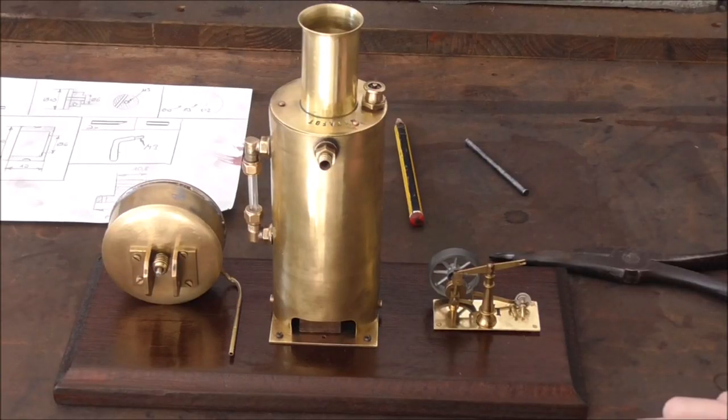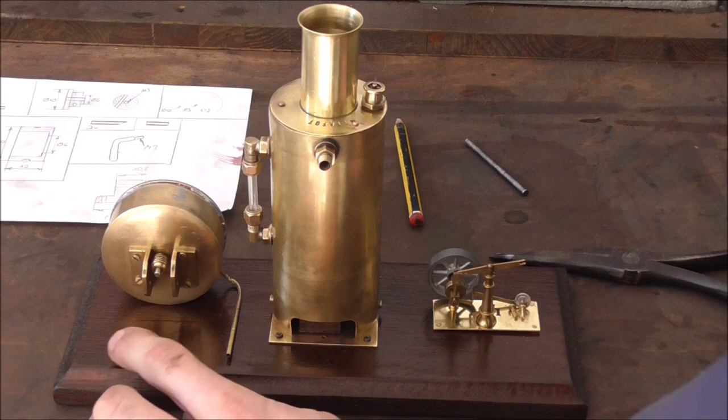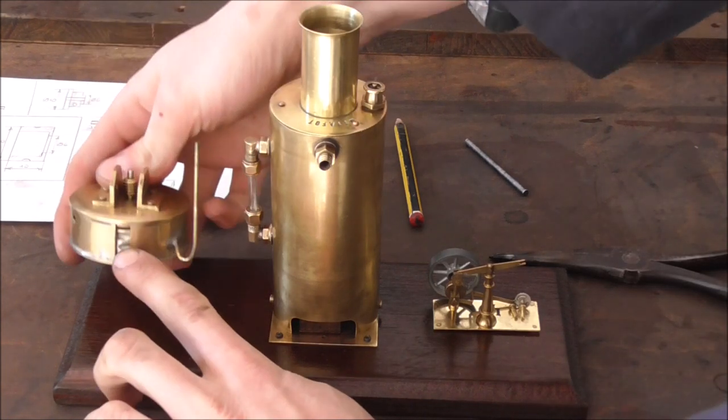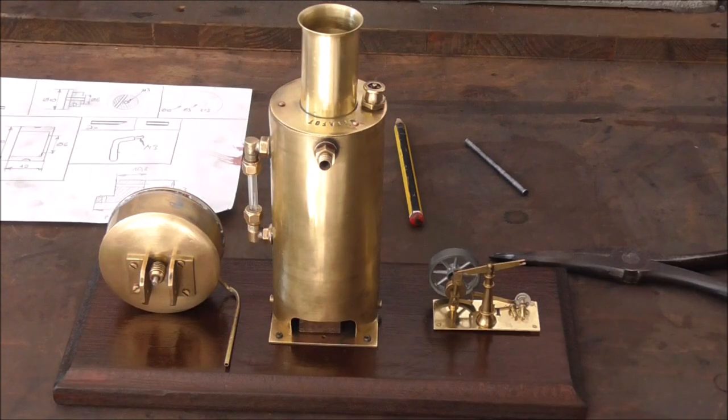We'll also need to make a sort of bracket in order to keep the turbine in place, and in order to catch the condensate running down the exit here we'll make ourselves a little tray to go around it.